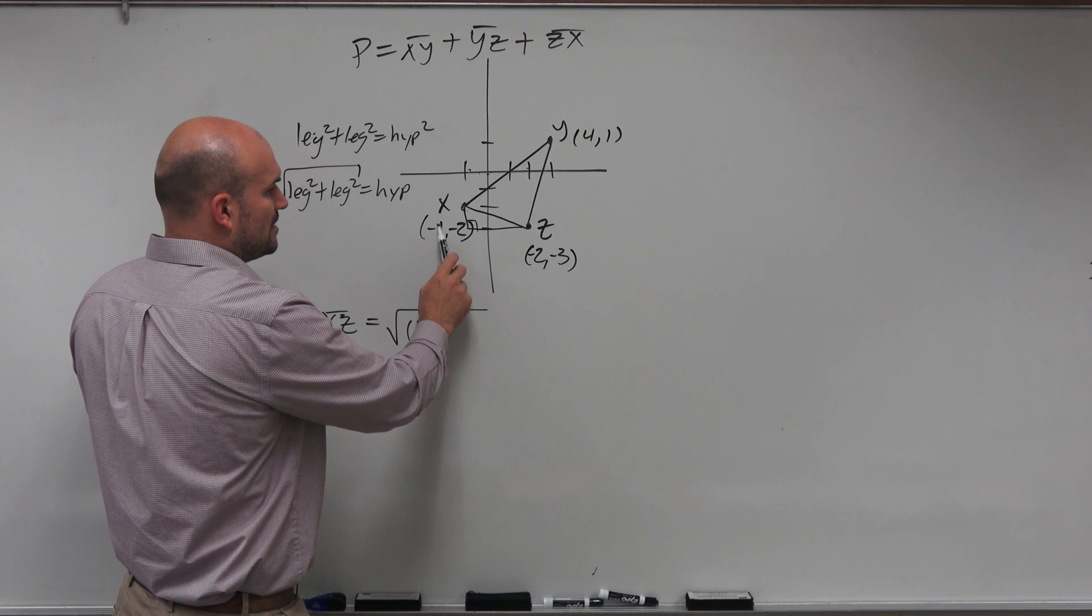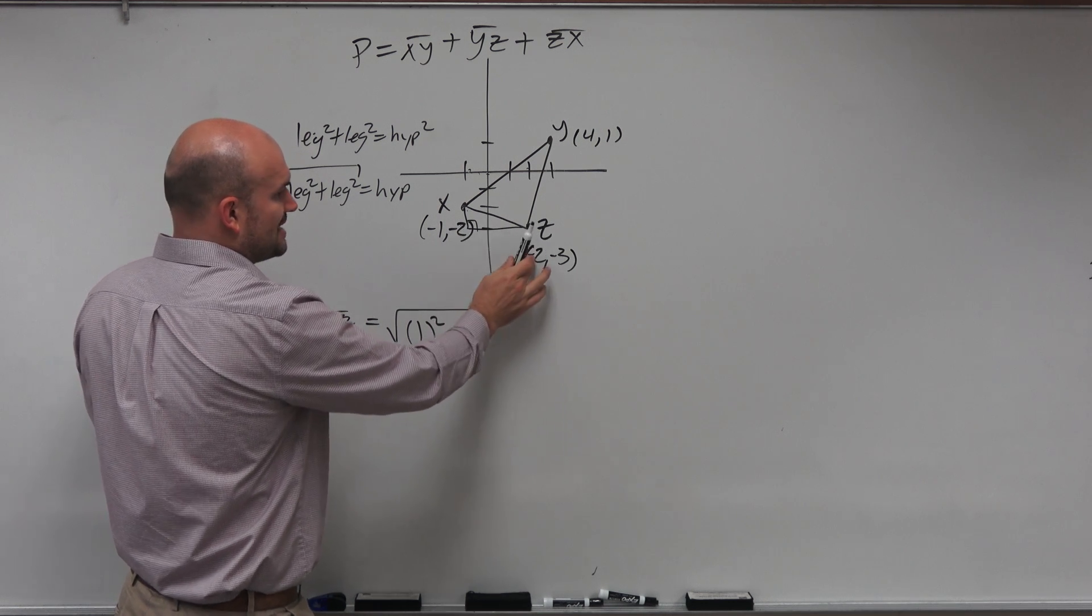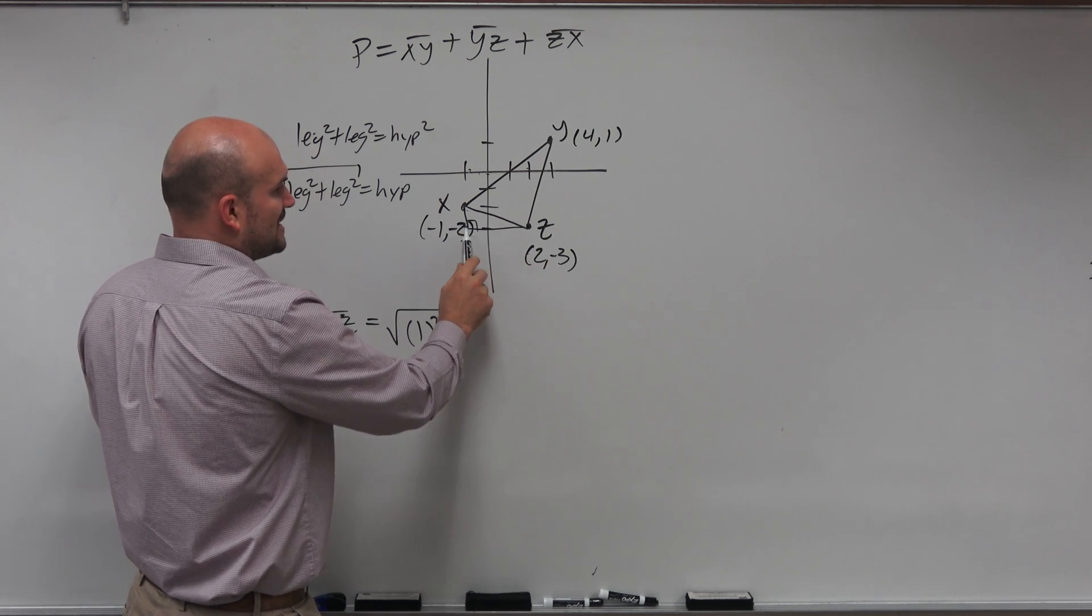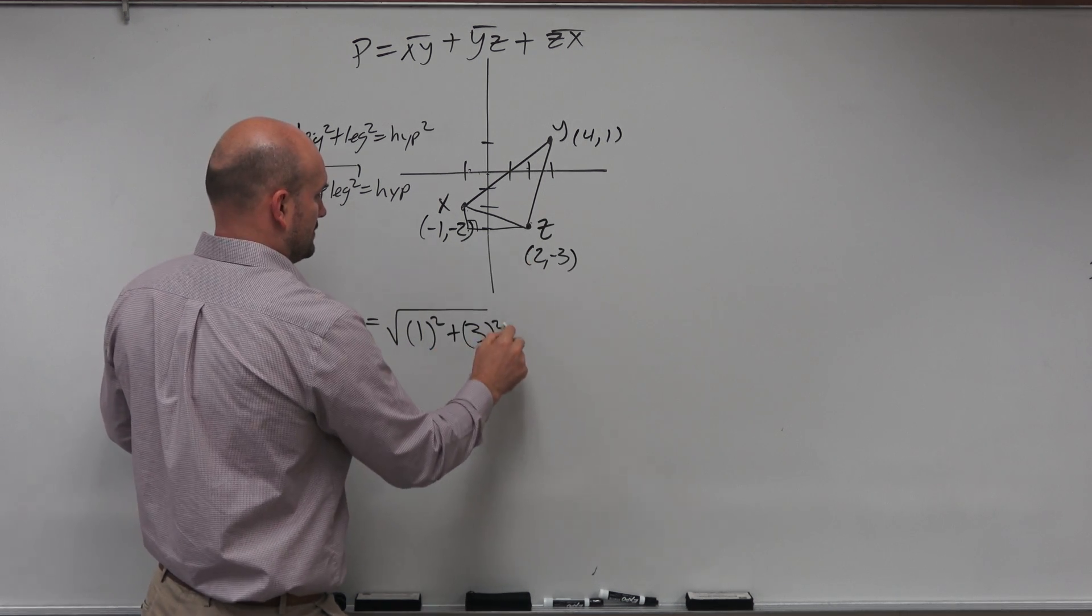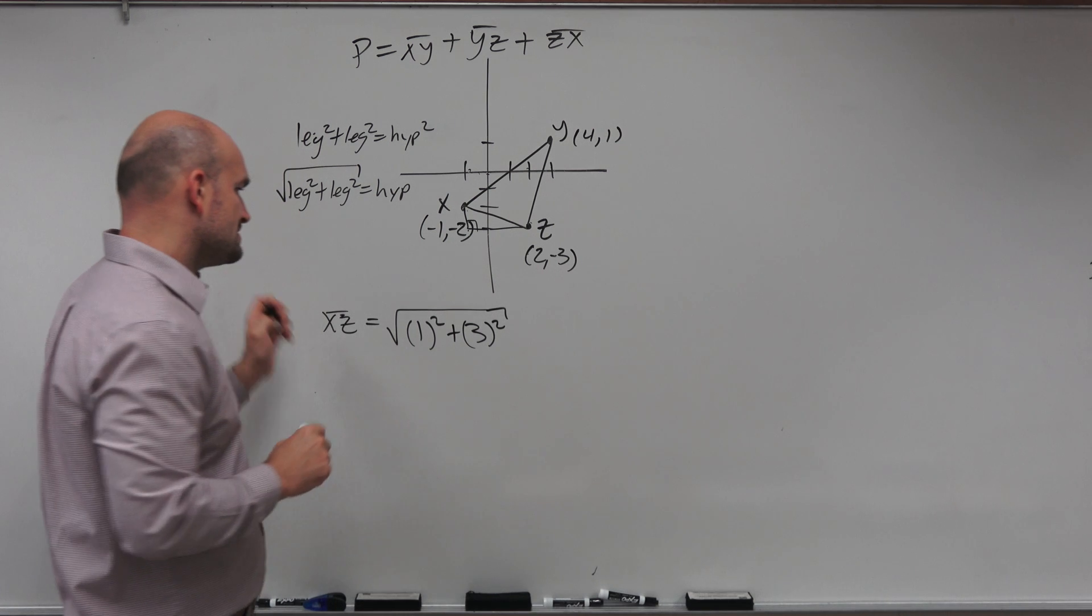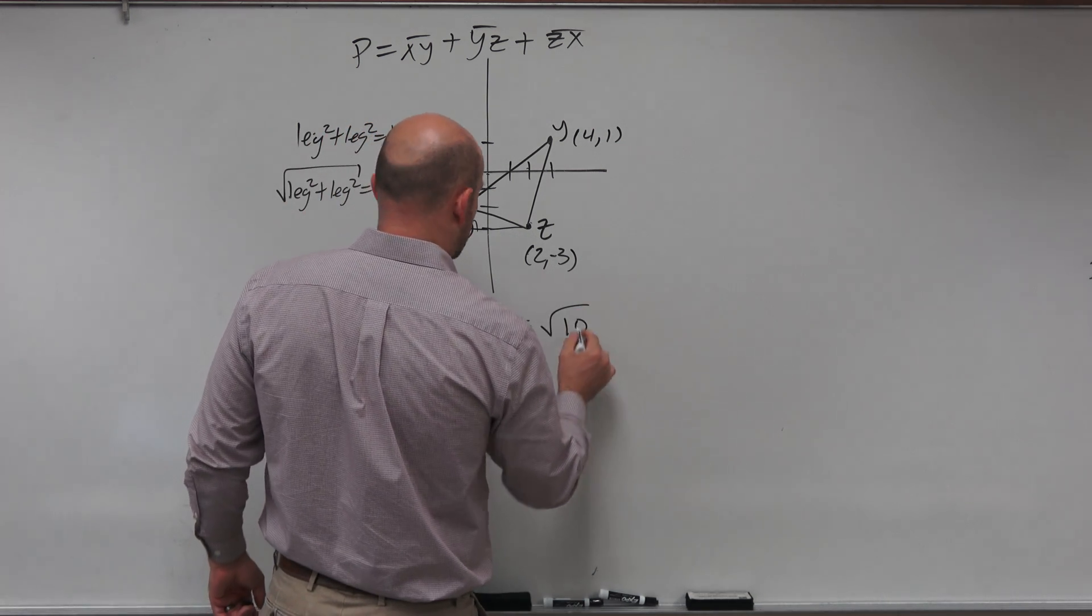Plus, how far do we go from negative 1 to positive 2? I did have that right. Negative 1 to positive 2. You can just count. 1, 2, 3. Plus 3. All right, so that's going to equal the square root of 10.